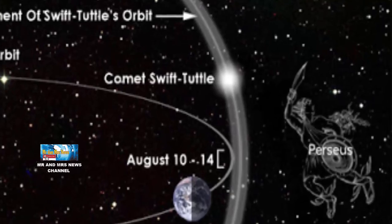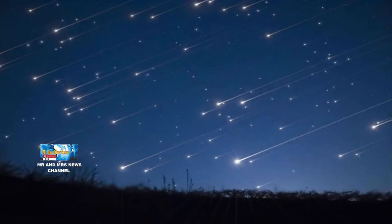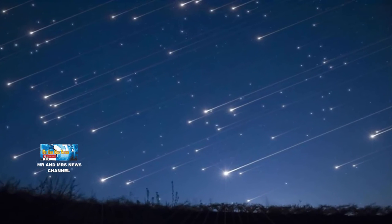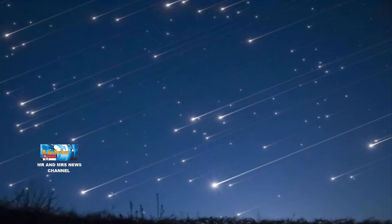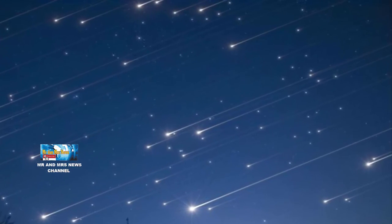Perseid yang mencapai puncaknya pada pertengahan Agustus dianggap sebagai hujan meteor terbaik tahun ini. Sebab meteor akan bergerak sangat cepat dan terang, bahkan meninggalkan jejak cahaya dan warna yang panjang saat mereka melesat melintasi atmosfer bumi.